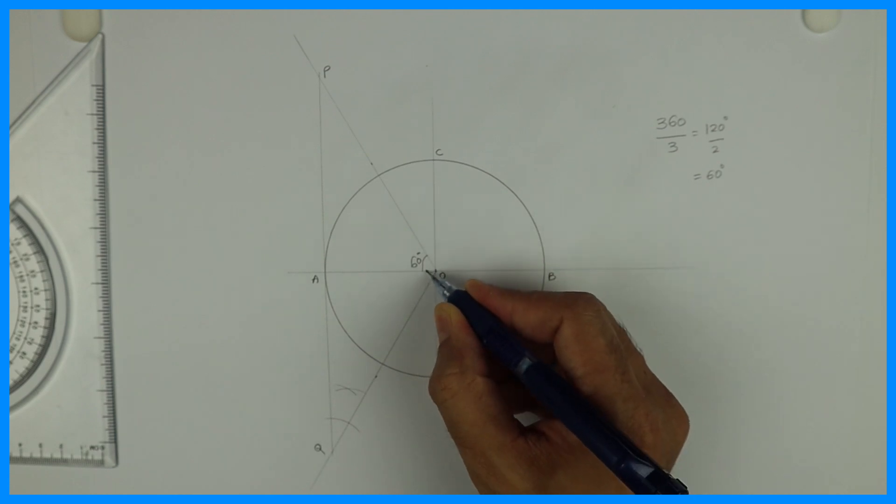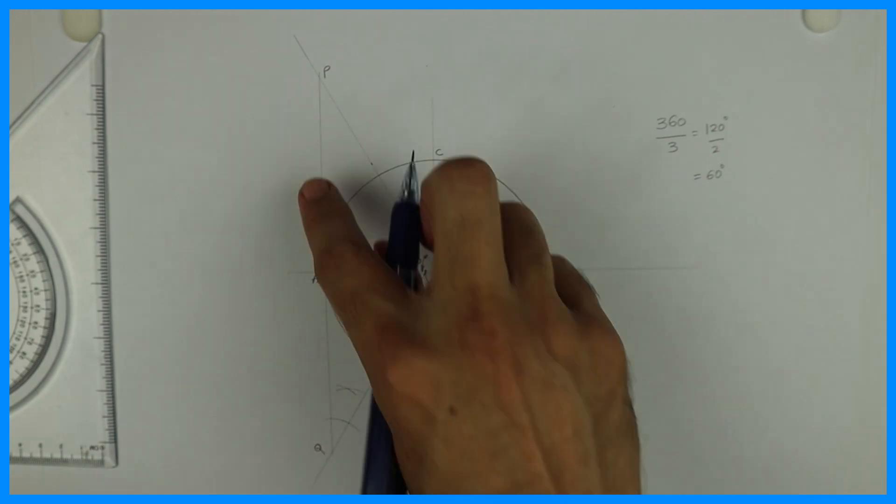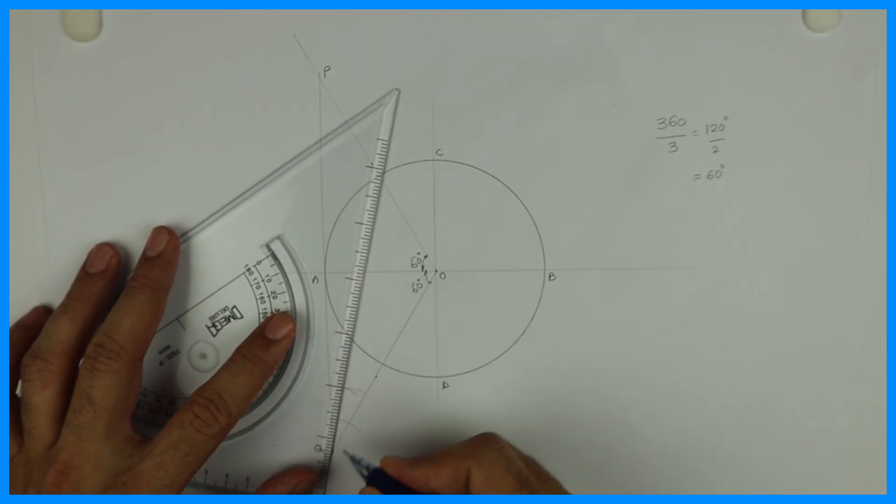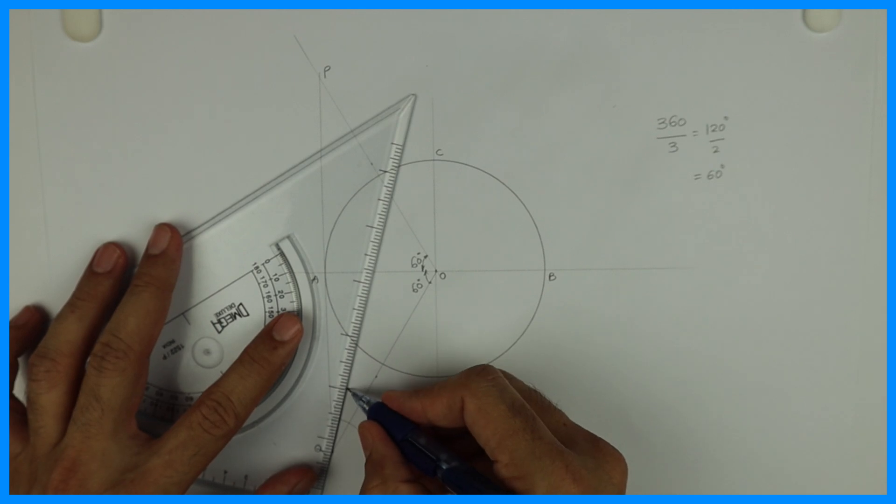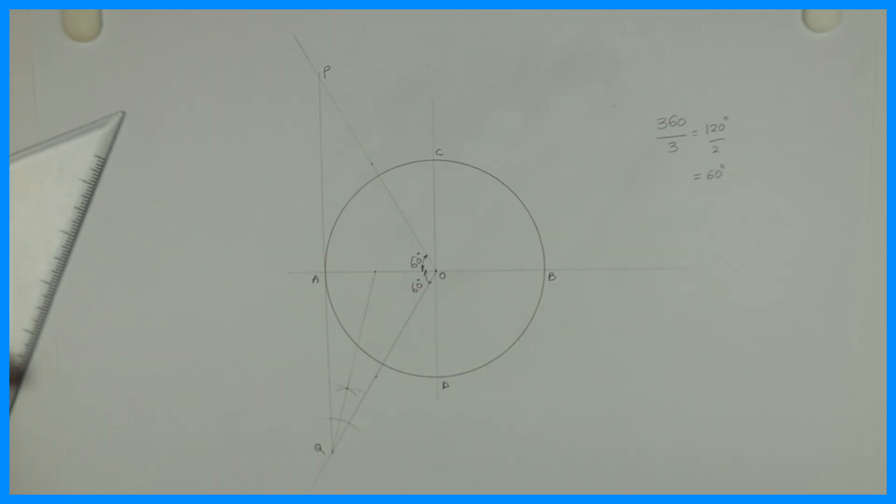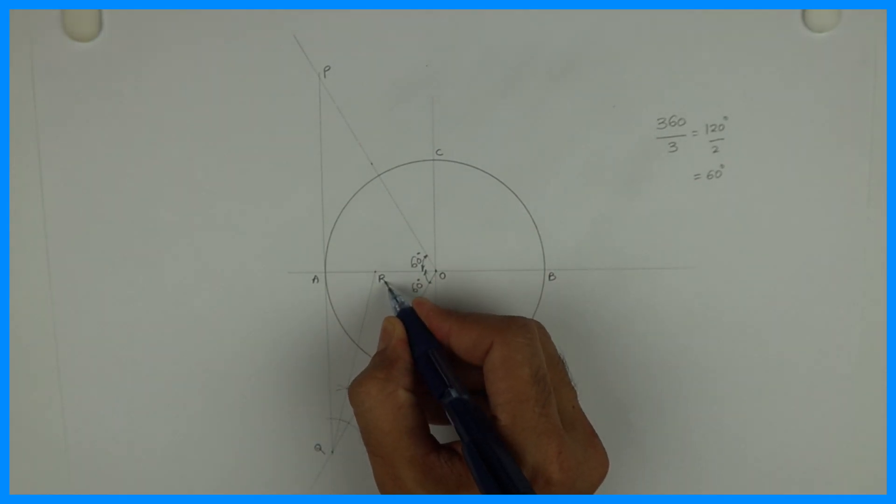This is 60 degrees. When you bisect this, it will touch here. So that would be point, let's say, R.